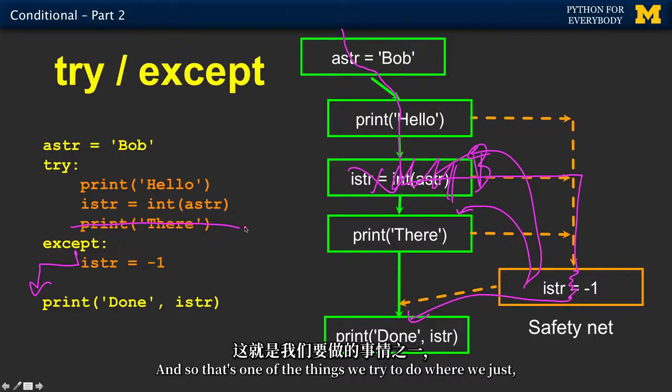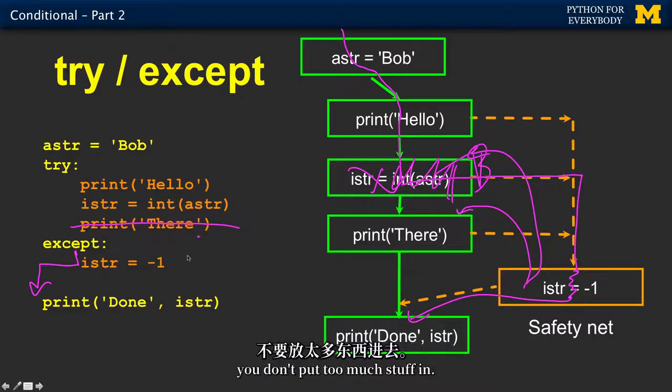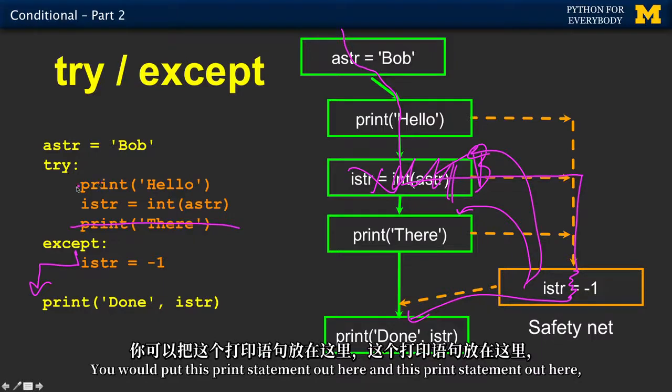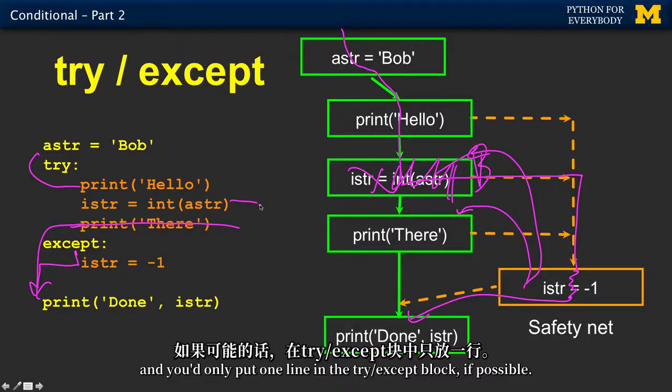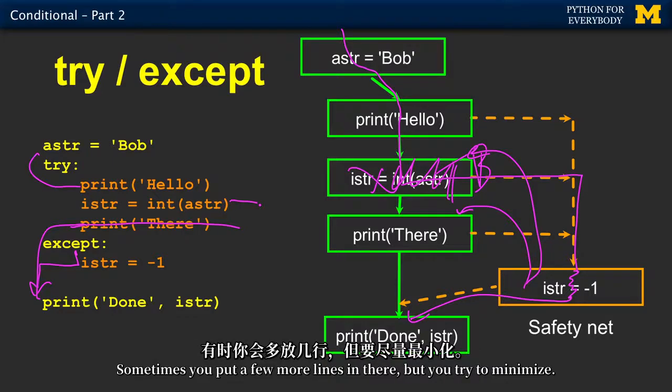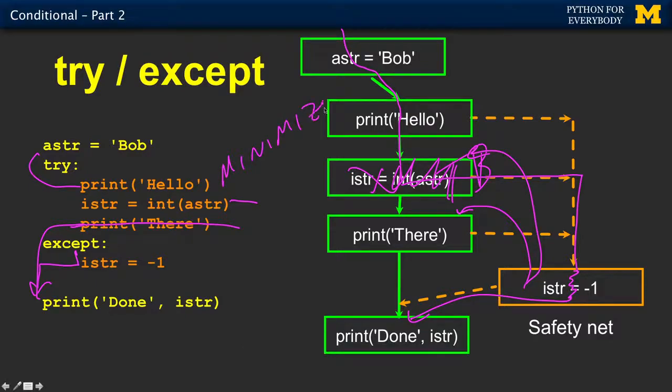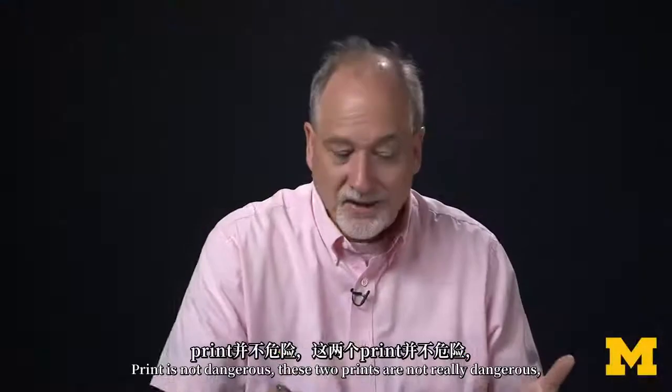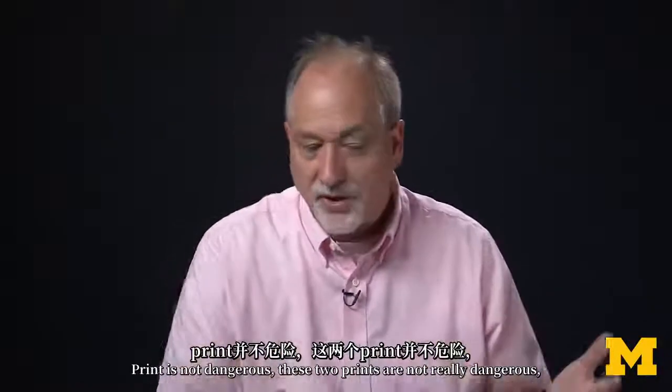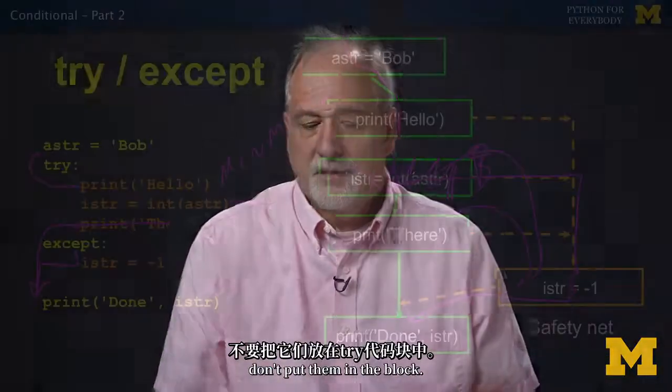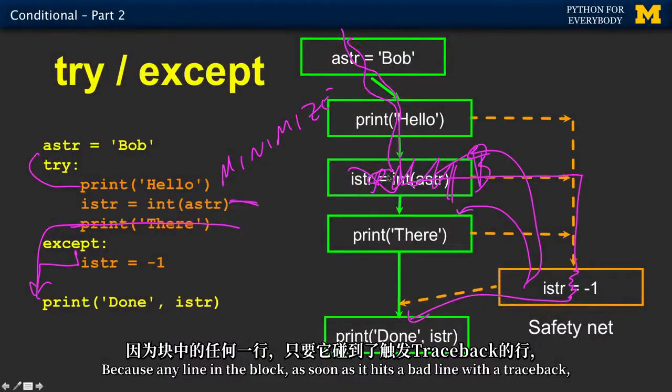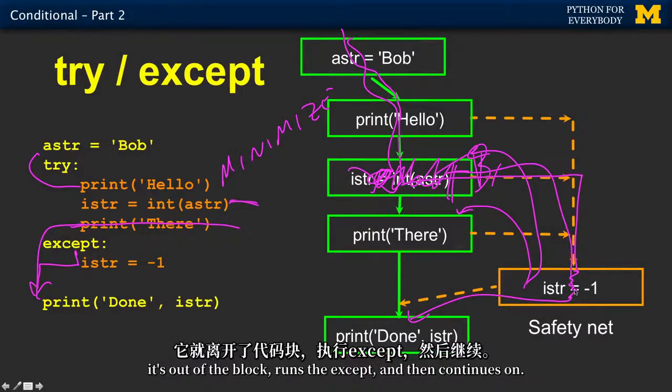Once it gets the accept block, there is only one way out to the bottom. And so this line of code never executes. And so that's one of the things we try to do where you don't put too much stuff in. You would put this print statement out here and this print statement out here, and you'd only put one line in the try accept block if possible. Sometimes you put a few more lines in there, but you try to minimize. You know what line is dangerous. Print is not dangerous. Don't put them in the block. Because any line in the block, as soon as it hits a bad line with a traceback, it's out of the block, runs the accept, and then continues on.